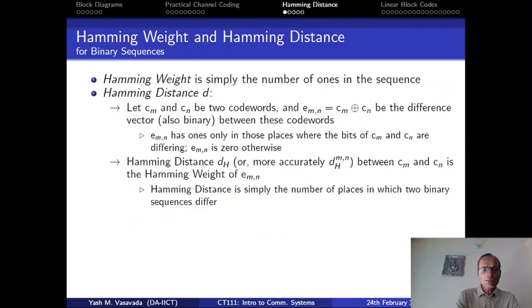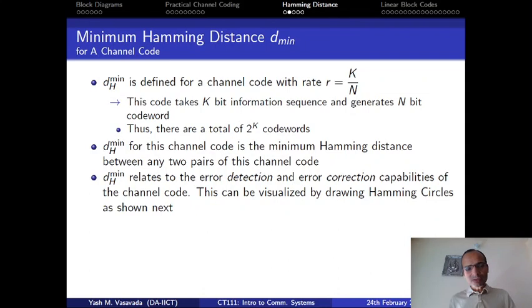We have talked about the Hamming weight and the Hamming distance of the channel coding schemes, and we also have defined a parameter called minimum Hamming distance. And this is the minimum of all pairwise Hamming distances between any two pairs of this channel code. And we have seen earlier that this minimum Hamming distance actually is crucial in determining the error detection capability, which we have denoted as td, and error correction capability, which is tc of the channel code.